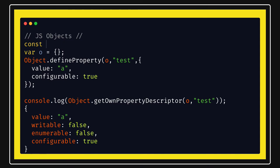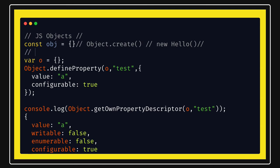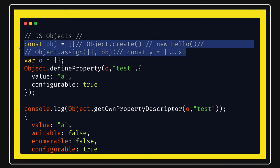If we simply say how to create an object, it is simple — you can use double curly braces, or you can use Object.create, or you can create a new object using a constructor function like 'new Hello' where Hello is a function. You can also create a new object from another object using Object.create passing the existing object, or using Object.assign passing the existing object. Similarly, you can use a spread operator to create a new copy from the existing object.